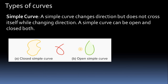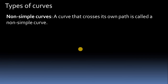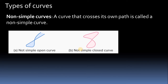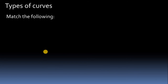Non-simple curve: a curve that crosses its own path is called a non-simple curve. This is a not-simple open curve, and this is a not-simple closed curve. The open one has a portion that remains open; the closed one has both portions closed after crossing. If you understand these types, you can easily solve questions on this basis.